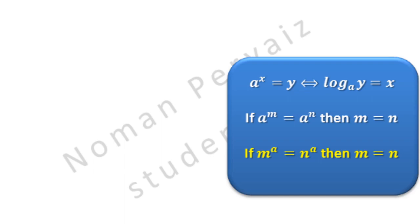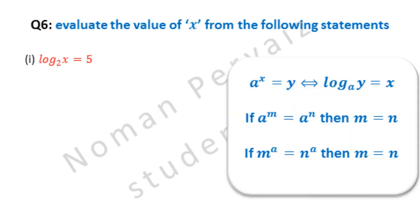In solving these questions, we will show you when we will use these properties. Question 6 is: evaluate the value of x from the following statements. Part 1 is log base 2 of x is equal to 5. By applying the first property, log base 2 of x equal to 5 becomes 2 raised to the power 5 equal to x.